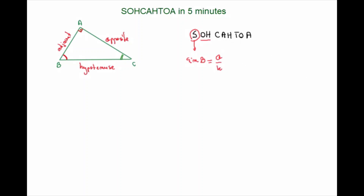The next letter is C, which stands for cosine. The cosine of B will be the adjacent over the hypotenuse — adjacent over hypotenuse. And finally we have T, which stands for tangent. The tangent of angle B is its opposite over the adjacent — opposite over adjacent. And that's the meaning of SOHCAHTOA.